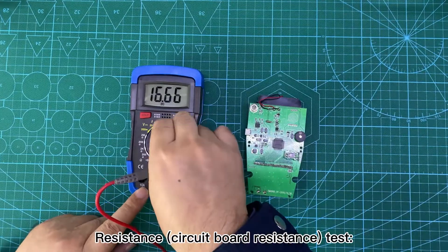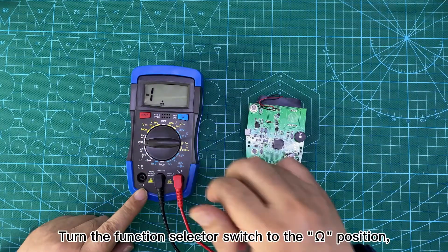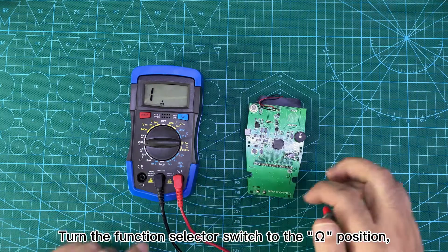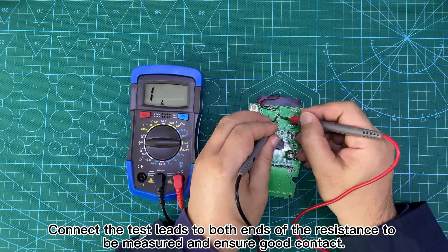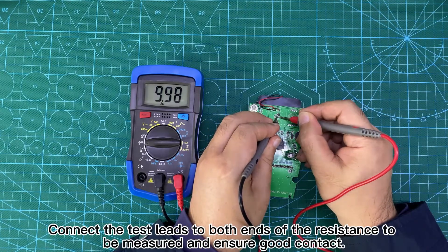Resistance circuit board resistance test. Turn the function selector switch to the omega position. Connect the test leads to both ends of the resistance to be measured and ensure good contact.